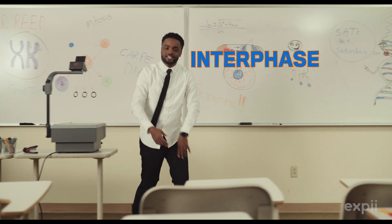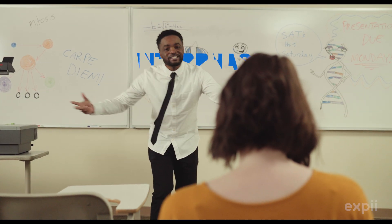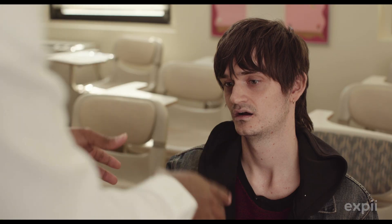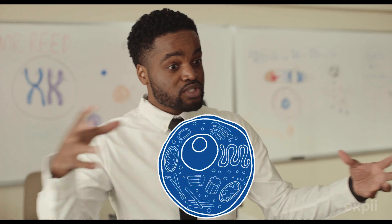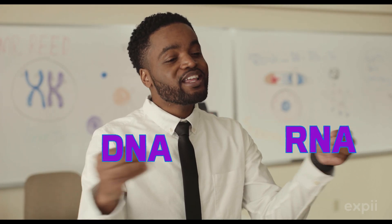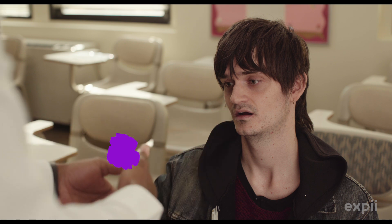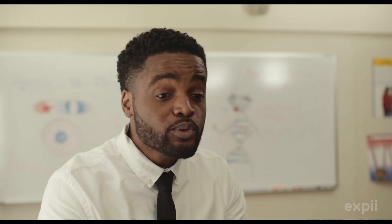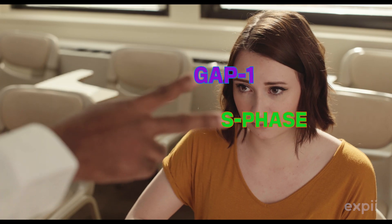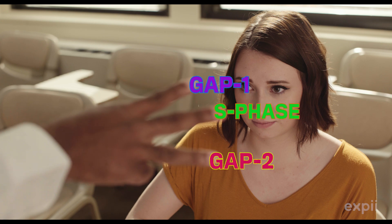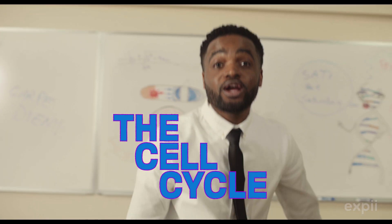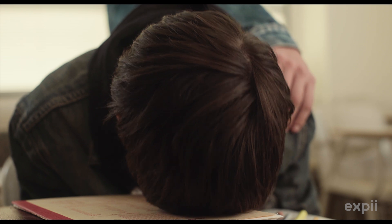Start with interphase, gather round and listen. It happens every time between cell division. Protein is made and the cell grows in size. The DNA and RNA, they'll synthesize. During interphase, a few things are true: just gap one, S phase, and gap two. When these things are happening, the growth is explosive — all in preparation for mitosis.